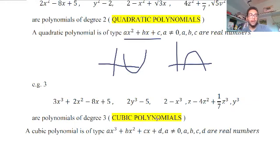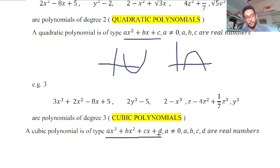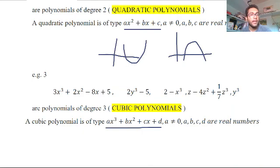The third type is the cubic polynomial — a polynomial of degree 3, where the highest power of the variable is 3. Examples: 3x³ + 2x² − 8x + 5, and 2y³ − 5, −x³, and others all have highest power 3. The general form of a cubic polynomial is ax³ + bx² + cx + d, where a ≠ 0 and b, c, d can be any real numbers.